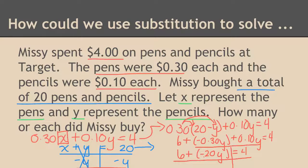Solve. So I'm going to subtract 6 from both sides. That gives me a negative 20 cents y equals negative 2. When I divide both sides by negative 20 cents, I will find out that y equals 10.